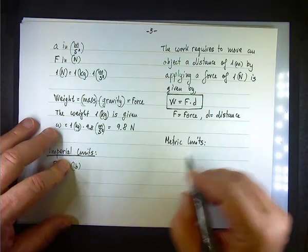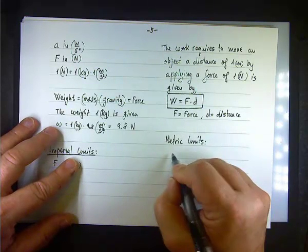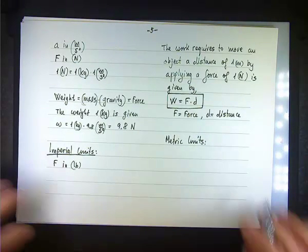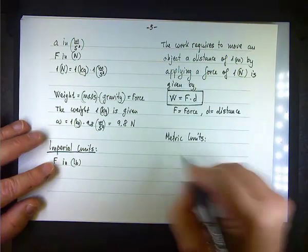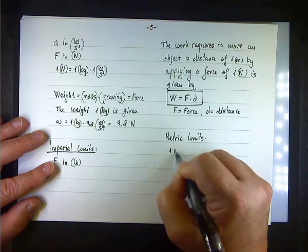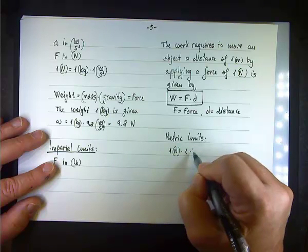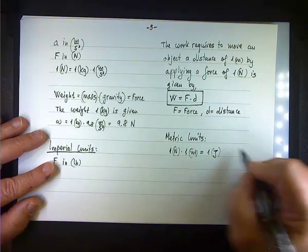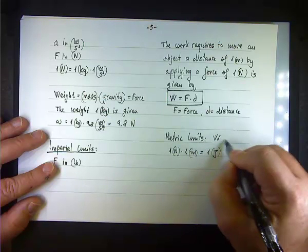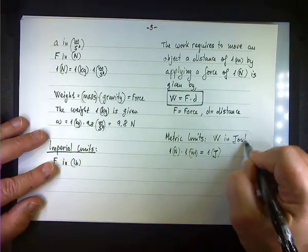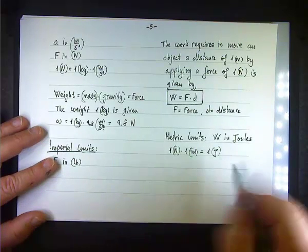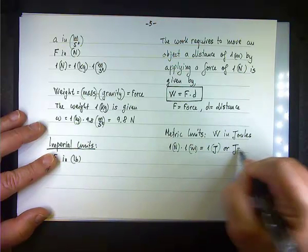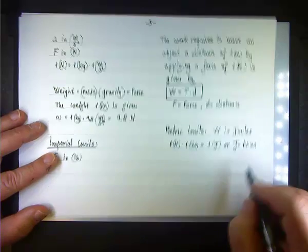A force of one Newton multiplied by a distance of one meter is equal to one joule. So the unit of work is the joule, indicated by J. In terms of units, J equals Newton times meter. This is the metric unit.